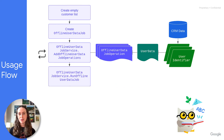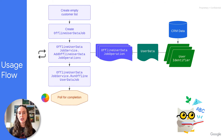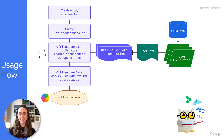Once your job is ready, run it with the Run Offline User Data Job method. To ensure your match rate is ready to be verified and the list ready for targeting, we recommend polling the job for completion. The job is done once its status is either success or failed.